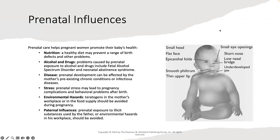This image shows a baby with fetal alcohol syndrome. They have smaller heads, small eye openings, a short nose, low nasal bridge, underdeveloped jaw, a thin upper lip, a smooth philtrum or cupid's bow, epicanthal folds by the eyelids, a flat face, and more.